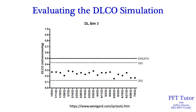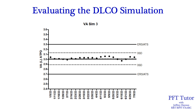I plot the DLCO simulation data in a Levy-Jennings plot, like you'd use for blood gas quality control data. I also set a 3 standard deviation limit, which tends to be tighter than the ERS ATS limits. I use my statistical software to make these graphs, but there are plenty of videos on YouTube showing how to do this in Excel. You can also do this for free on the Westgard website — go to tools and you should see the tool there; I'll place the link in the description. I also plot the simulated alveolar volume in a Levy-Jennings plot, and adding a 3 standard deviation range is, in my opinion, a better way to set the simulation limits — much tighter than the ERS ATS limits.